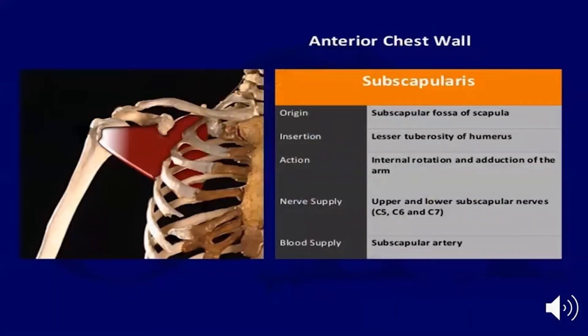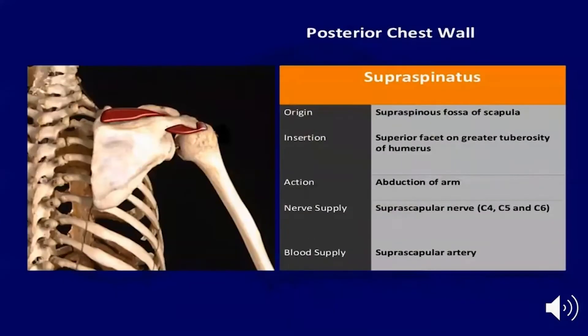Starting with the subscapularis, it arises from the subscapular fossa of the scapula and is inserted on the lesser tuberosity of the humerus. It is an internal rotator of the arm.